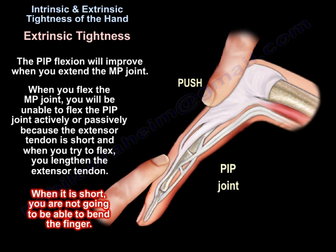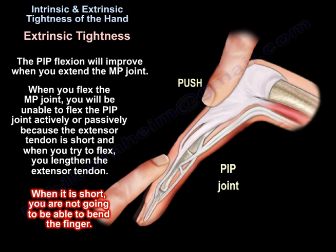When you flex the MP joint, you will be unable to flex the PIP joint — actively or passively — because the extensor tendon is short. When you try to flex, you lengthen the extensor tendon, and when it is short, you are not going to be able to bend the finger.